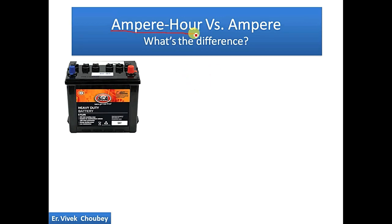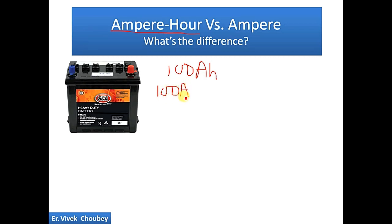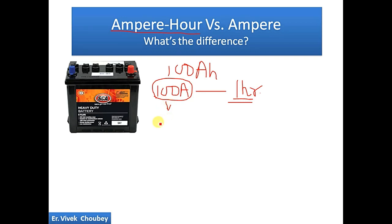So now, ampere-hour versus ampere — first we will understand the meaning of ampere-hour and then the whole thing will be clear. Let's say we have a battery rated as 100 ampere-hour. What is the meaning of 100 ampere-hour? In literal terms, it means the battery is capable of supplying 100 amps of current for one hour. So if we are continuously taking 100 amperes of current from it, it will discharge in one hour.